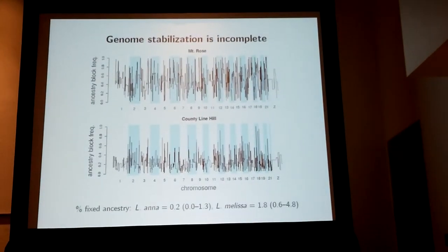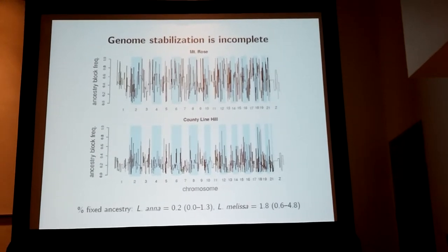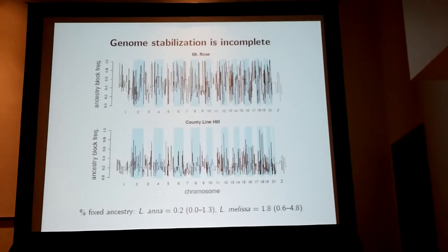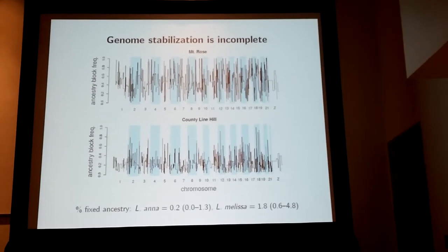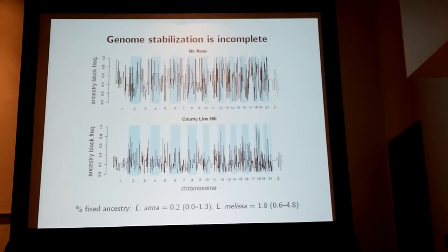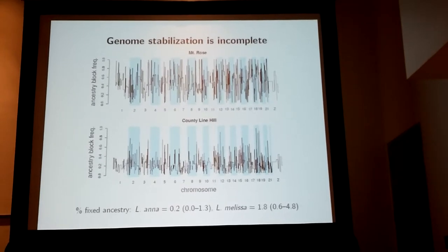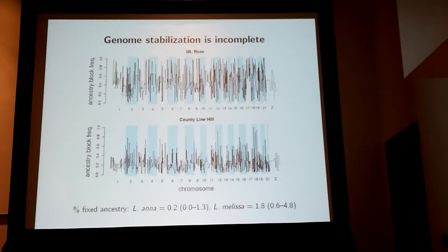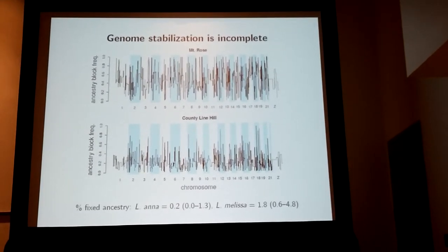We're looking at ancestry frequencies for two populations that are representative of the rest — specifically the Lyciides ancestry frequencies in those admixed populations — across the 22 autosomes and Z chromosomes. Two things to take home from this: one is there's lots of variation in ancestry frequencies across the genome, such that the mean ancestry frequency is not very indicative of what you see at any specific point. The second is that only about 2% of the genome is fixed for anomalous ancestry, so genome stabilization is far from complete, with lots of segregating variation.